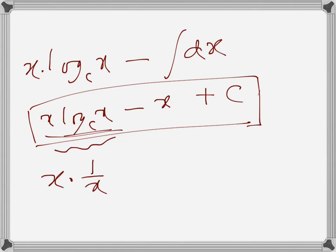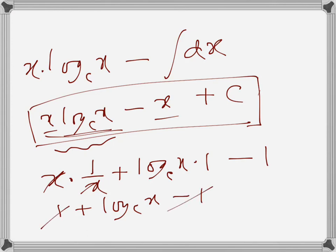plus log_e x times the derivative of x which is 1, then minus 1. This gives 1 plus log_e x minus 1, which cancels to log_e x, confirming our derivative.